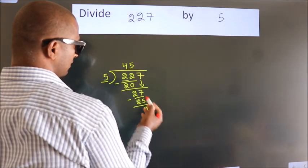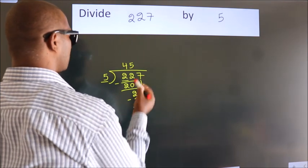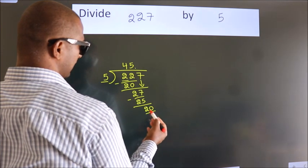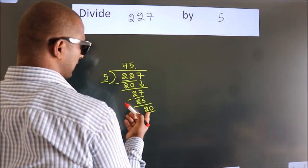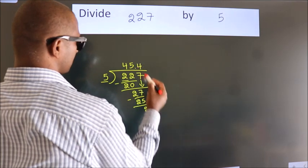After this, no more numbers to bring down. So what we do is put a dot and take 0. So, 20. When do we get 20 in the 5 table? 5 times 4, 20.